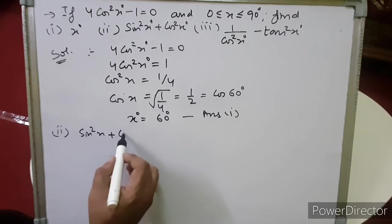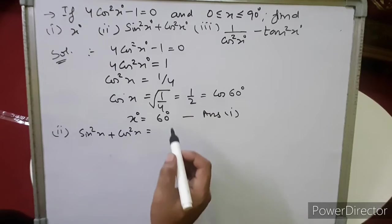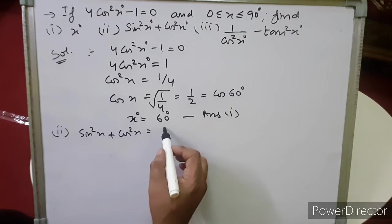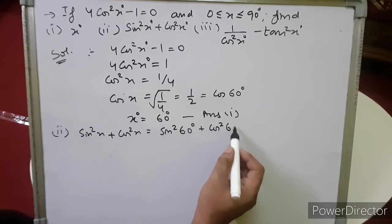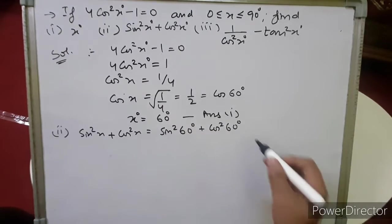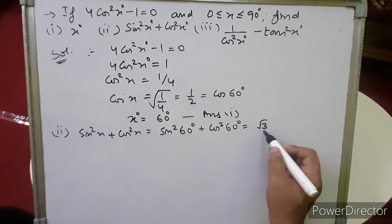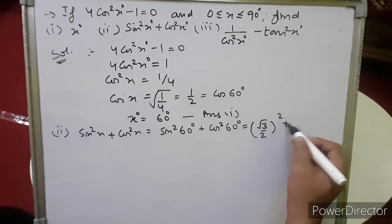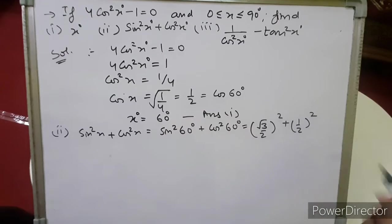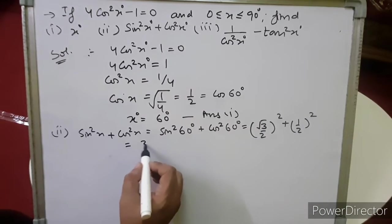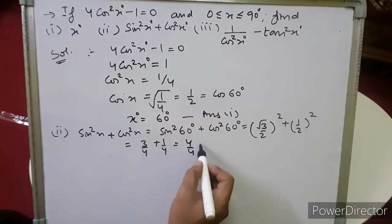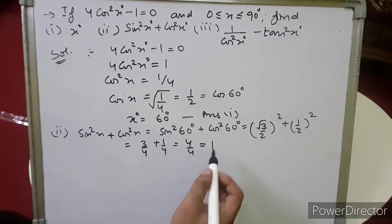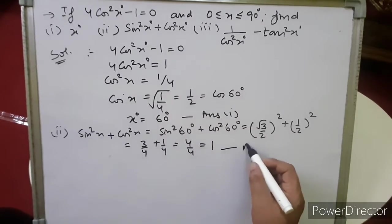Now for sin²x + cos²x, substituting x = 60°: sin²60° + cos²60°. Sin 60° = √3/2, cos 60° = 1/2. So (√3/2)² + (1/2)² = 3/4 + 1/4 = 4/4 = 1. So the second answer is 1.